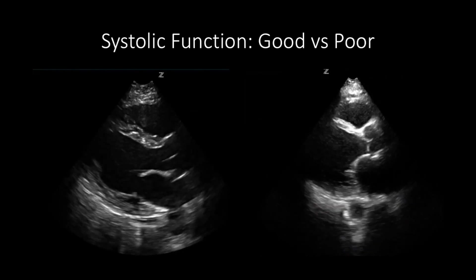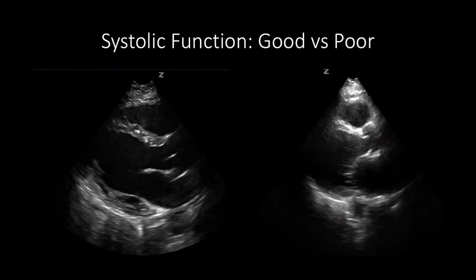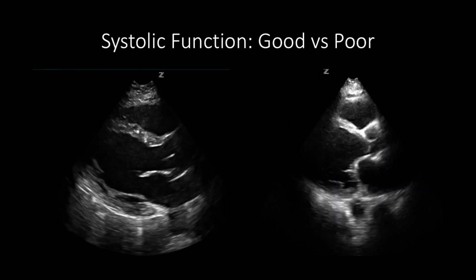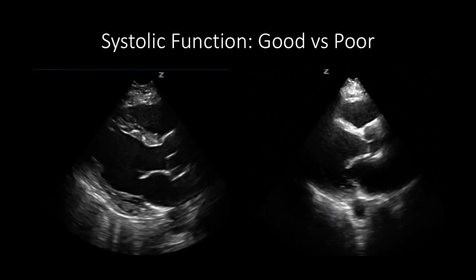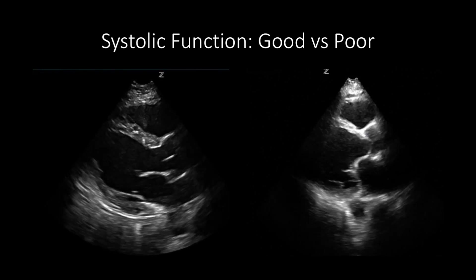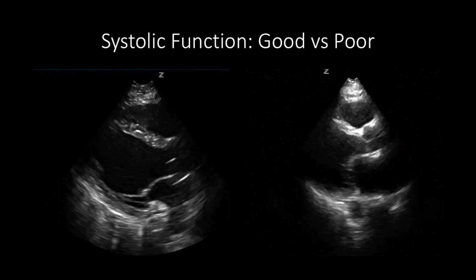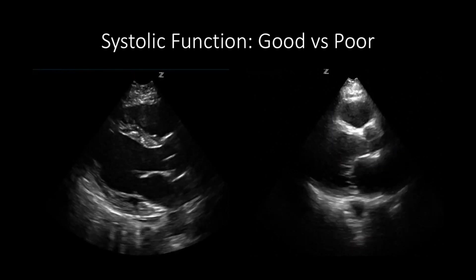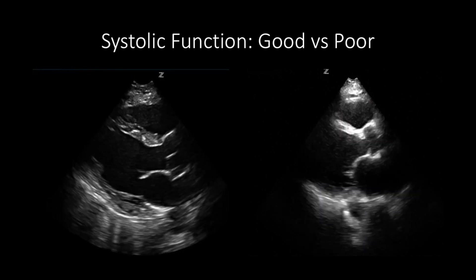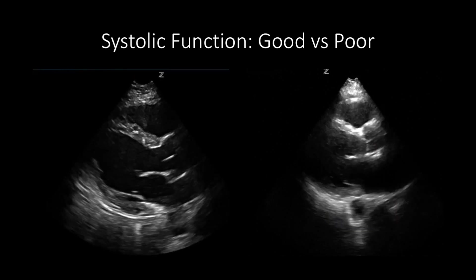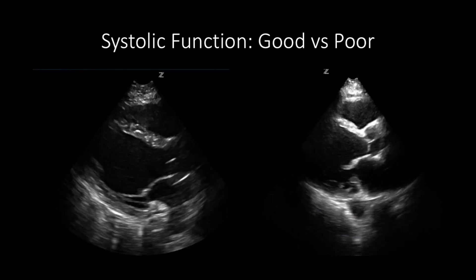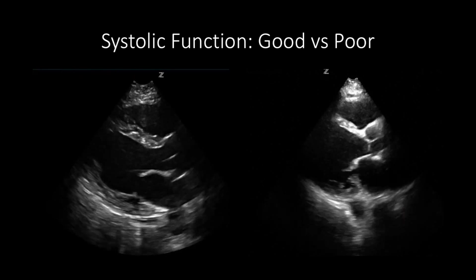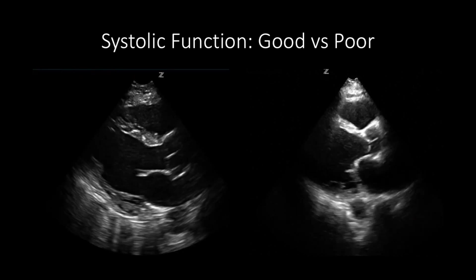Here is an example of good versus poor systolic function. The image on the left shows good systolic function, while the image on the right shows poor systolic function. We can tell it is poor because the mitral valve leaflets are not hitting the ventricular walls, and the ventricular walls are not contracting strongly.